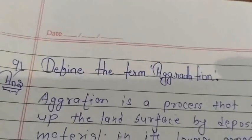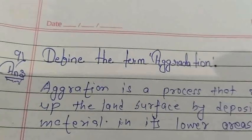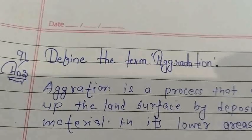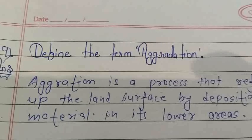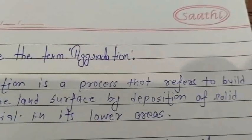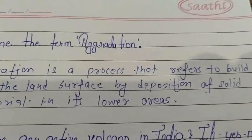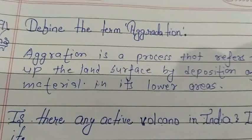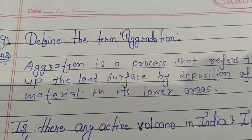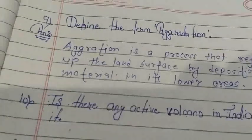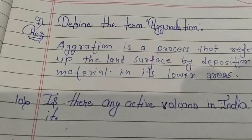Question number nine: Define the term aggradation. Aggradation is a process that refers to the build-up of the land surface by deposition of solid material in its lower areas. Note: the correct spelling should be a-g-g-r-a-d-a-t-i-o-n.